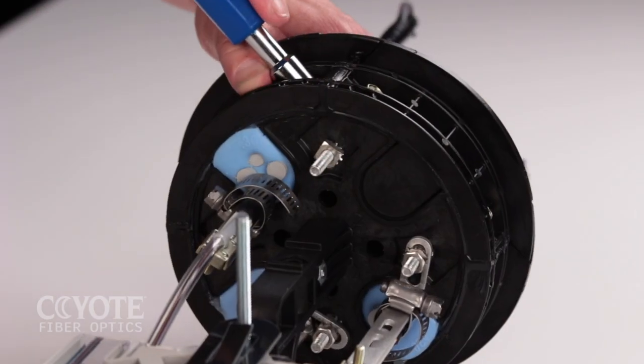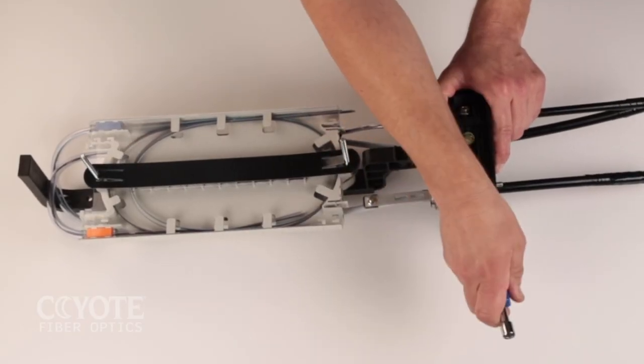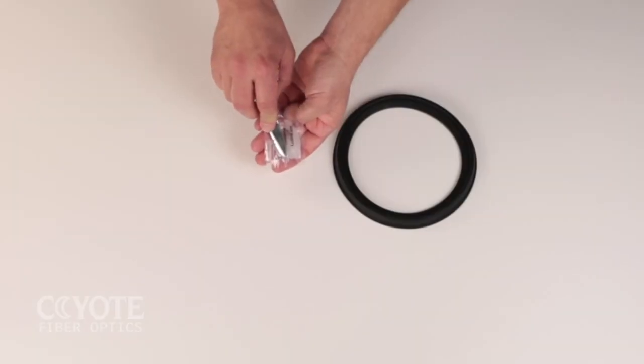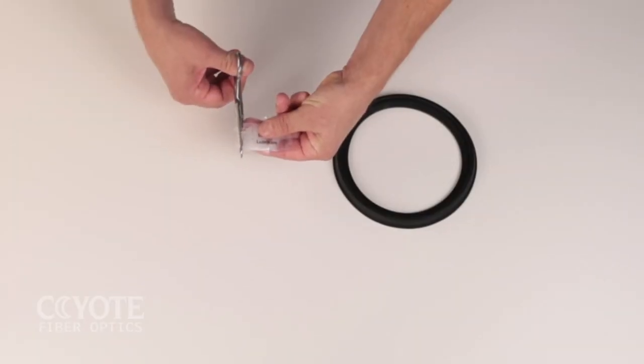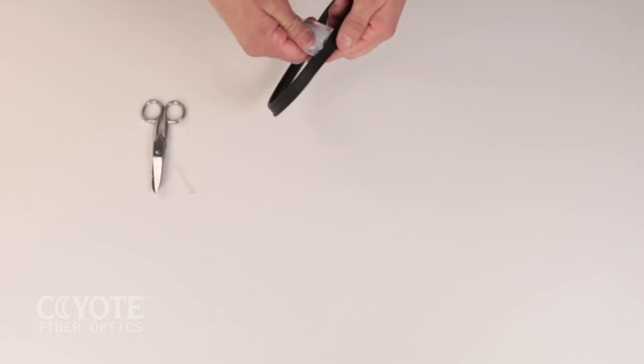Retighten all cable cap bolts to assure that the cable caps are fully seated. Lubricate all surfaces around the gasket with provided silicone lubricant to assure easy assembly and closure re-entry.